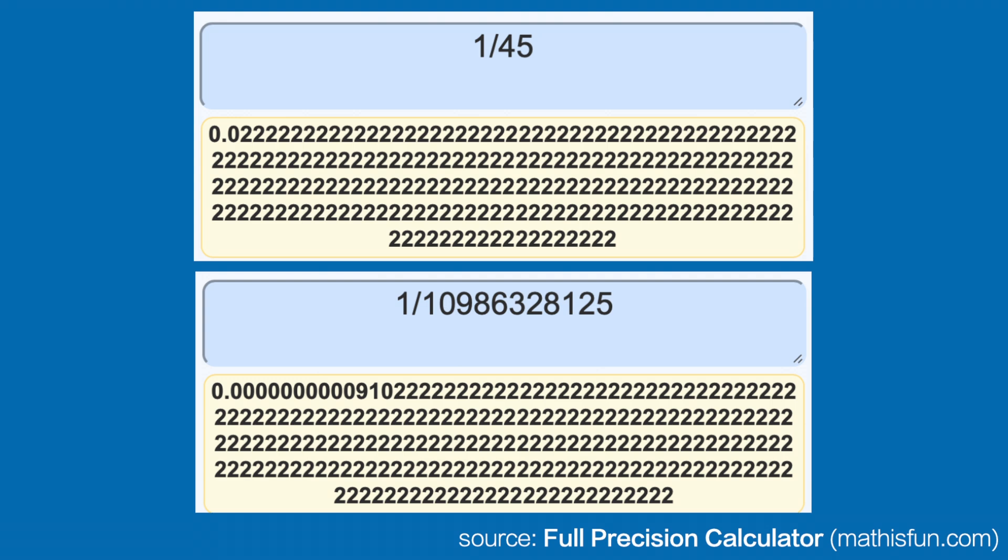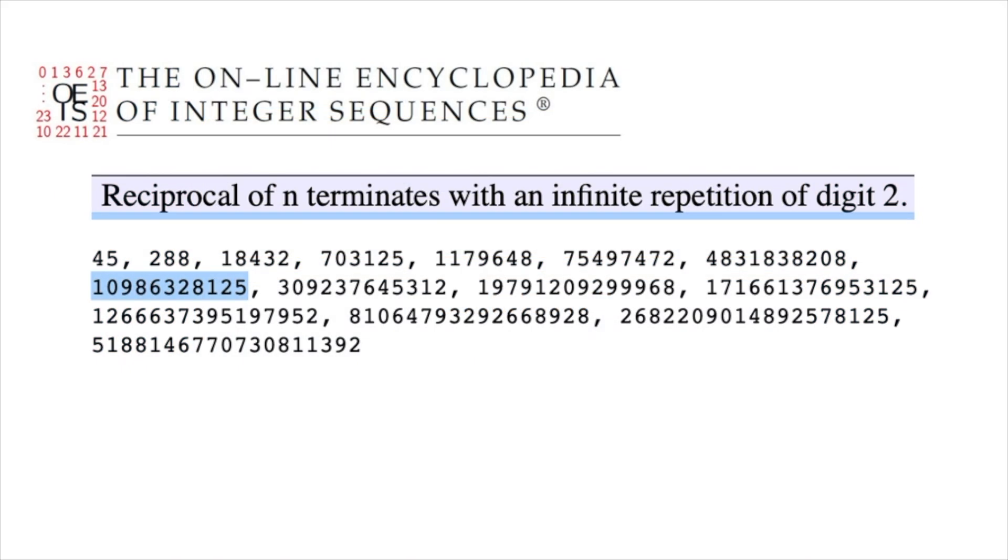Another relationship between the strange number and 45 is that both of them, as reciprocals, where one is divided by that number, produce a repeating digit of 2, which is shown here in the online encyclopedia of integer sequences. Notice that in the list of numbers producing repeating 2s are several octaves of D at harmonic 9. In fact, every even number listed here is an octave of D.